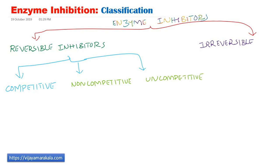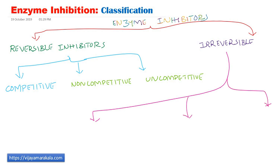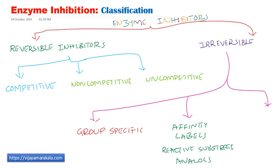The another category is irreversible inhibitors, where the binding is very tight and the inhibitor binds to the enzyme covalently. Irreversible inhibitors are also three types. The first is group specific — they react only with certain groups. The second type is reactive substrate analogues, also called affinity labels; they are structurally similar to the substrate, just like competitive inhibitors, but they are irreversible. The last category is suicide inhibition, which is a mechanism-based inhibition.